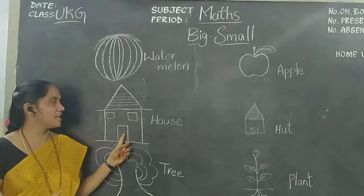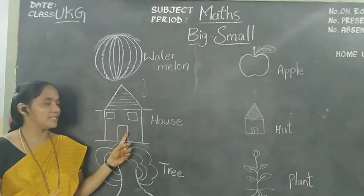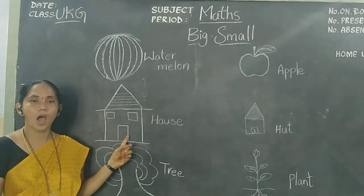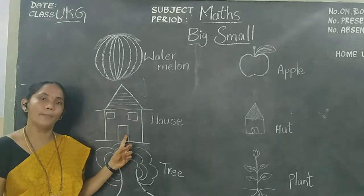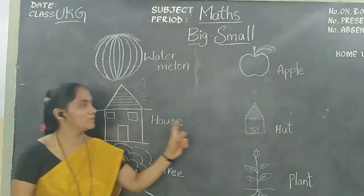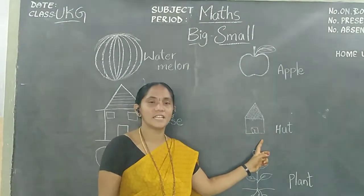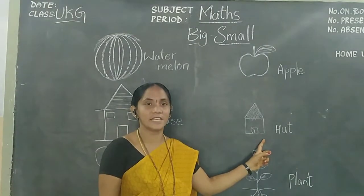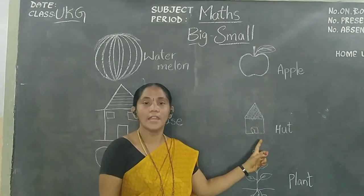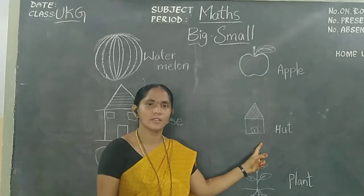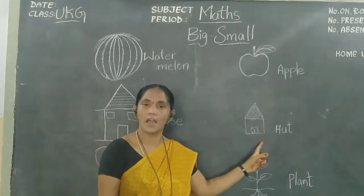What is this, children? This is a house. It looks very big. What is this, children? This is a small hut. It looks very small.